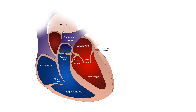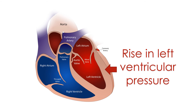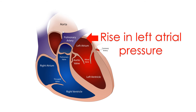When the heart is unable to relax well and fill properly, filling pressures rise in an attempt to maintain a good output. This means that pressure in the left ventricle when it relaxes is higher. A higher pressure in the left ventricle is transmitted back to the left atrium — the upper chamber from which it receives blood when it relaxes. A rise in left atrial pressure is in turn reflected onto the pulmonary veins, which bring oxygenated blood to the left atrium from the lungs. Increase in pressure in the pulmonary veins increases the pressure in the small blood vessels of the lungs, known as capillaries.